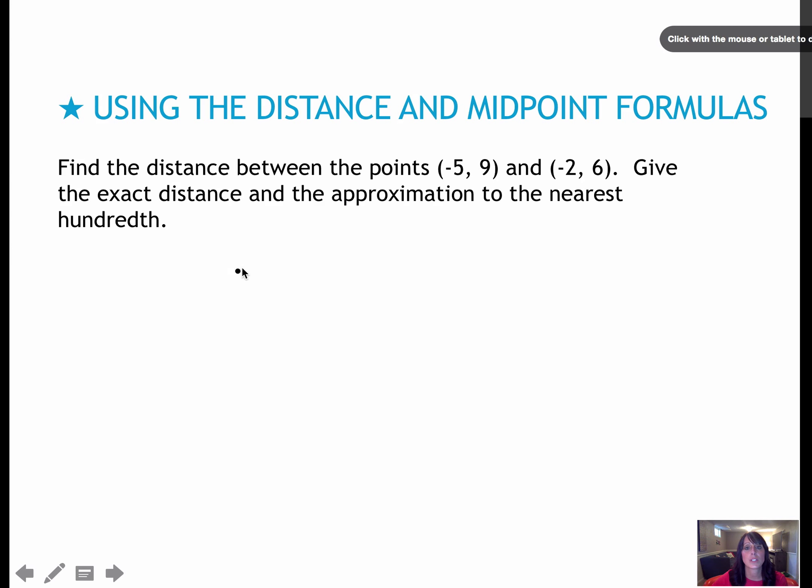For the first values I'll use my x values, so (-5 - (-2))². Remember when you minus a negative, you keep-flip-change to add the opposite. Then (9 - 6)². That gives me (-5 + 2)², or (-3)², which is 9. 9 minus 6 is 3, 3 squared is 9. That gives me radical 18.